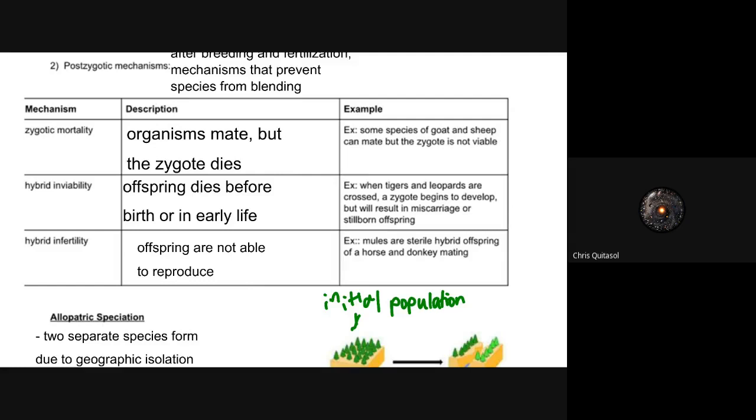Zygotic mortality means organisms can mate successfully with no pre-zygotic mechanisms that stop them, but the zygote dies for one reason or another. It prevents the zygote from going through proper mitosis to form a fetus. For example, goat and sheep can mate because they are very similar species, but the zygote once fertilized is not viable.